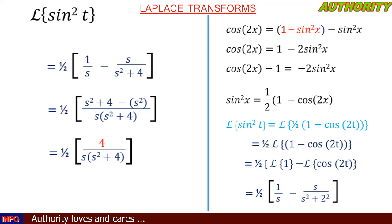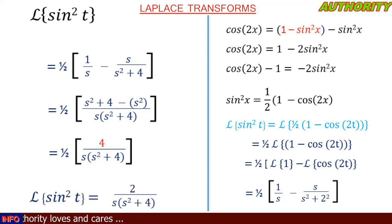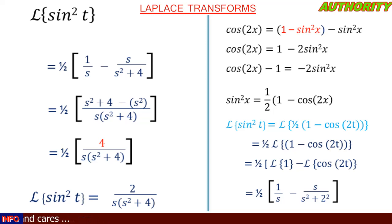The 4 in the numerator divided by the 2 gives 2 remaining. Therefore, the Laplace transform of sin²t is equal to 2 / [s(s² + 4)].